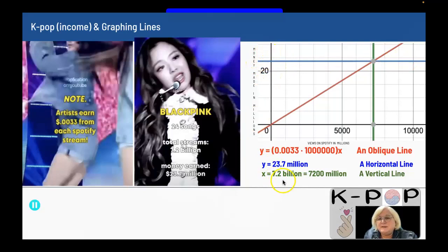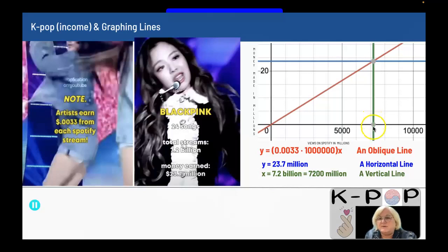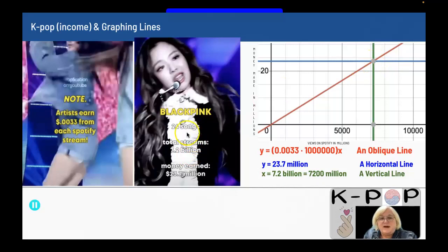7.2 billion is the same thing as 7,200 million. So 7,200 million is right here, and that's my vertical line. Vertical lines go up and down, and you have a vertical line when you have X equals a number. So all three lines satisfy this information.